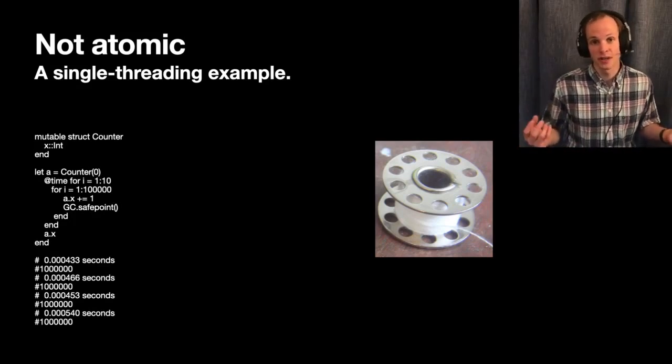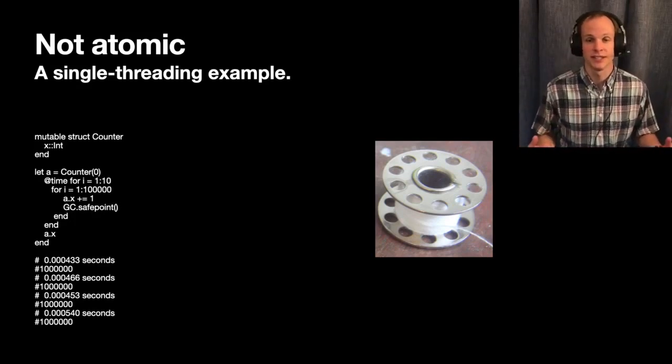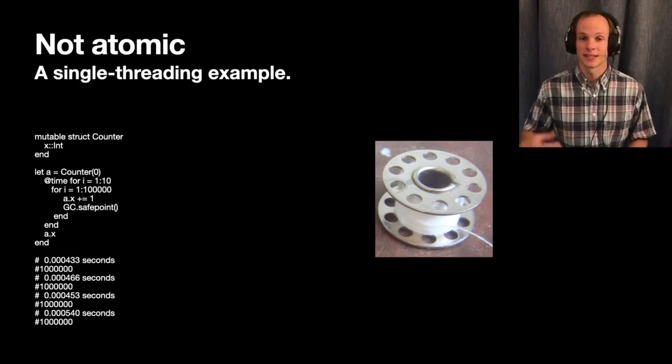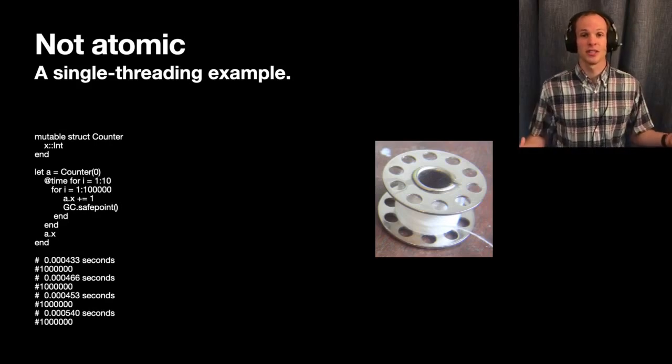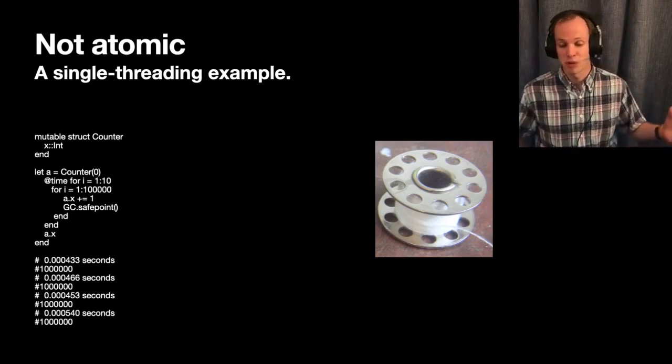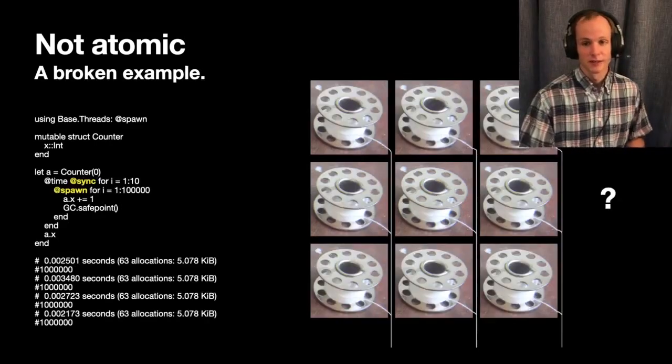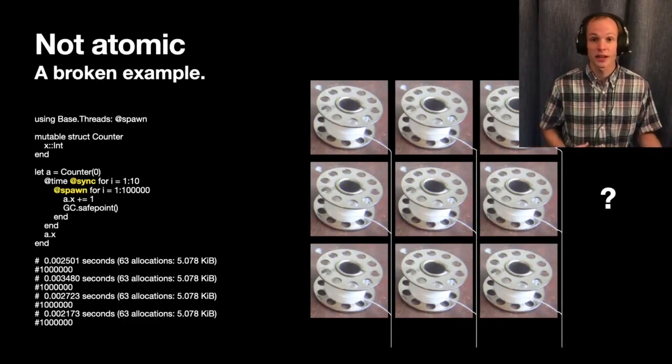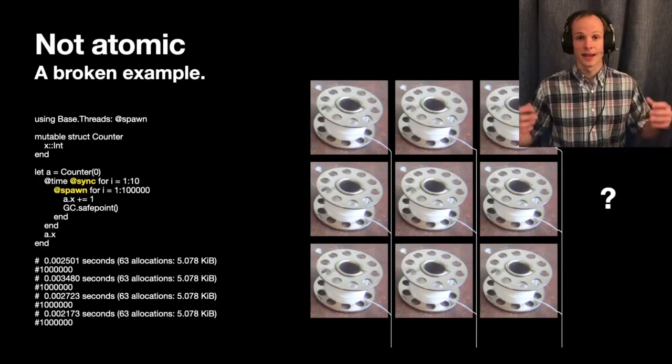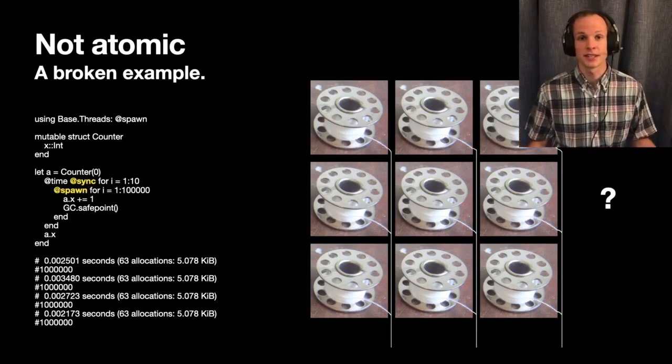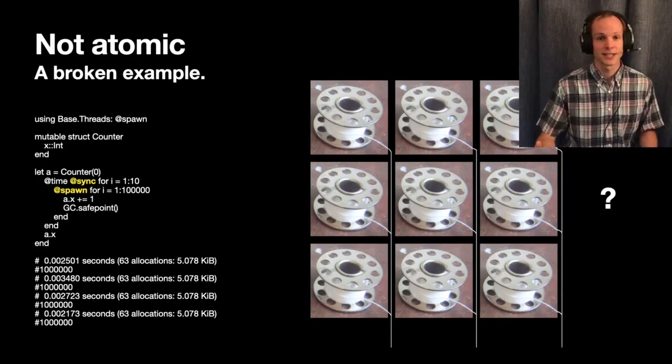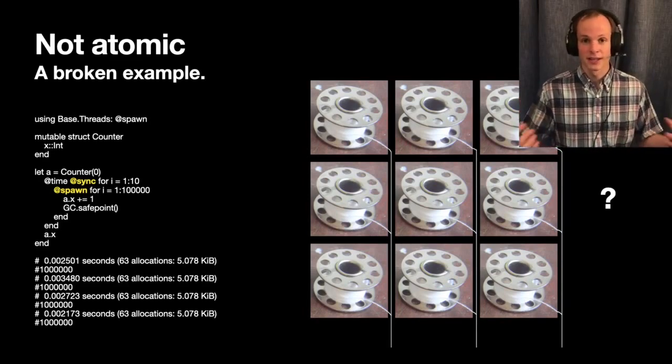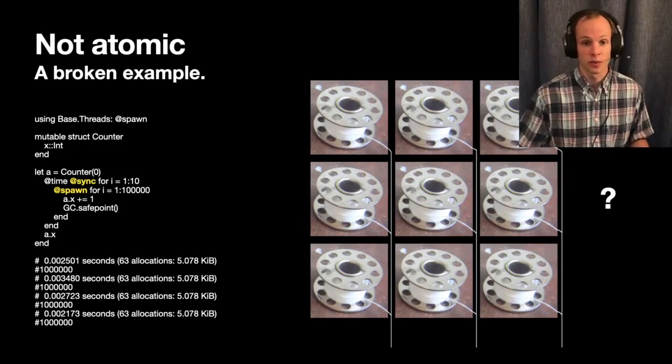But say our boss comes in and says we bought you this great laptop, it's got eight cores in it, why aren't you using all of them? It should be much faster, right? And so you say okay, I've heard that we can just put @sync on the code and @spawn and things will launch on the threads that they should be on. I've run test cases and I'm thinking if I just start running more threads, we should have exactly the results that we want to see.